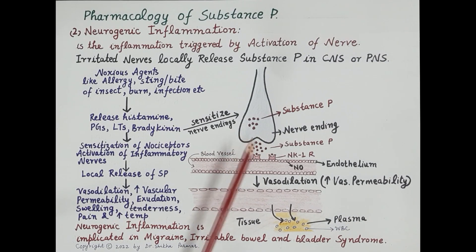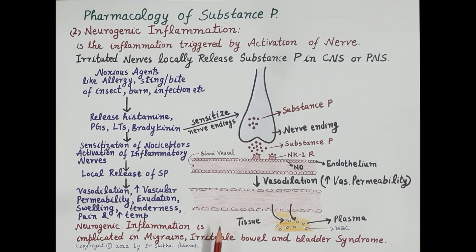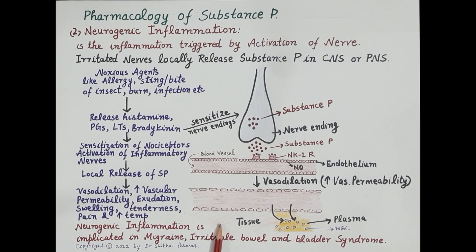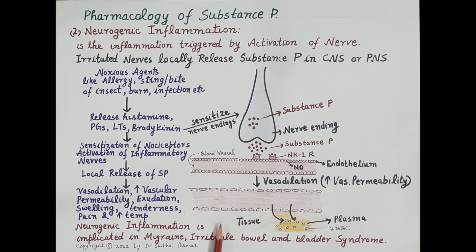Neurogenic inflammation is very important in the pathogenesis of diseases like migraine, irritable bowel syndrome, and irritable bladder syndrome.